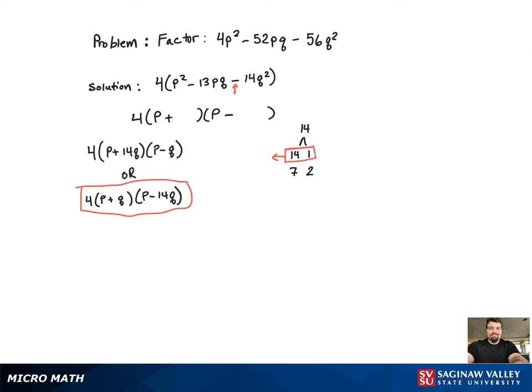Because of that, we need the negative sign to be with the bigger term, the 14. So that's the final factored version.